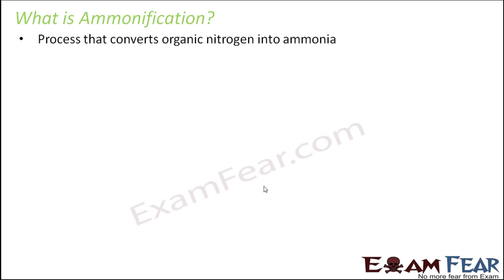Now you might feel that ammonification suddenly came out of the way, because we almost completed one cycle. Atmospheric nitrogen got converted into ammonia by nitrogen fixation, then ammonia to nitrites, then nitrates by nitrification, then nitrates back to atmospheric nitrogen by denitrification. So these three processes together completed one cycle.